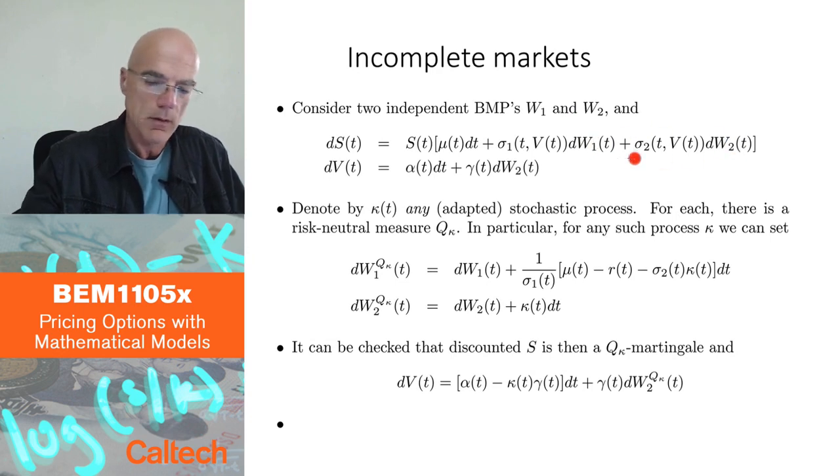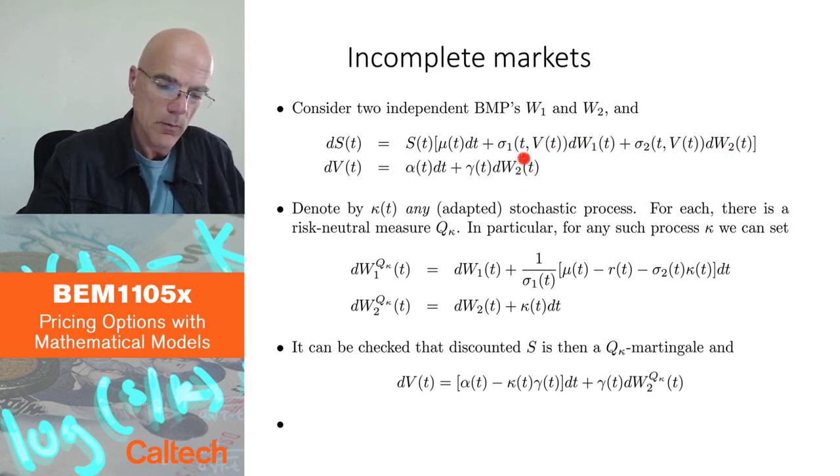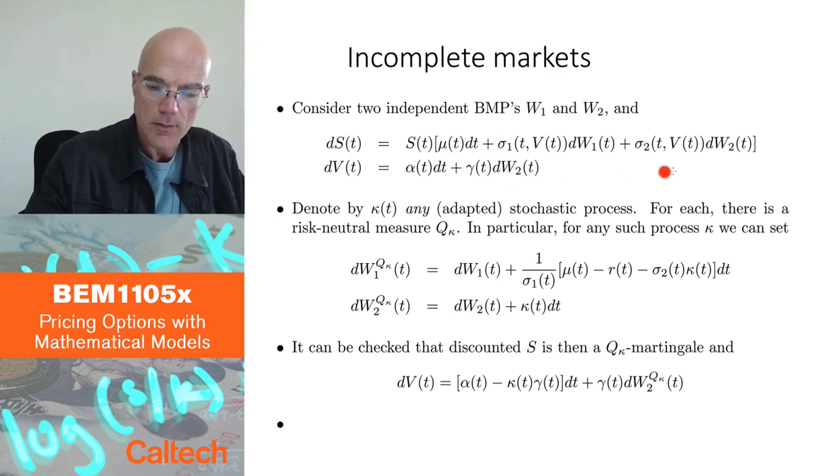I chose to put two Brownian motions, W1 and W2, which are independent in S, and one Brownian motion in V, in the volatility, and then the sigmas in some way depend on volatility, like in Heston's model it was square root of V, but in general you can have something like this.